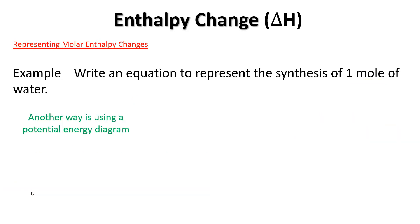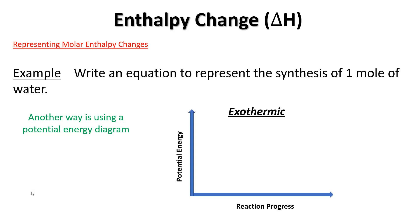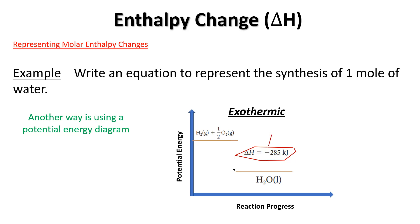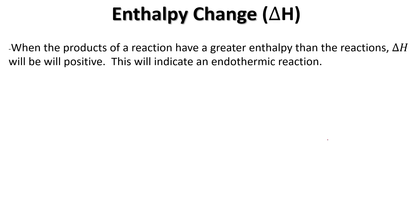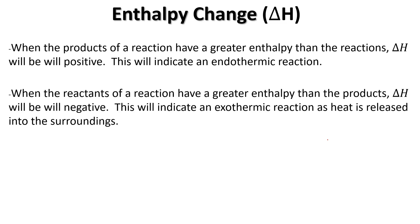Another way to represent this would be using a potential energy diagram. The reactants are higher, and there's a drop in energy down to the products. From the perspective of the system, the energy has gone down by that amount of energy — that's why delta H is negative. When the products of a reaction have a greater enthalpy than the reactants, delta H will be positive, indicating an endothermic reaction. The opposite is also true of the reactants and the products.